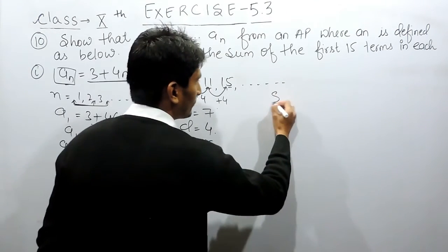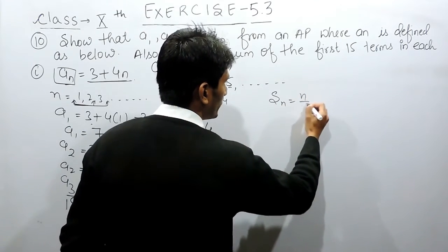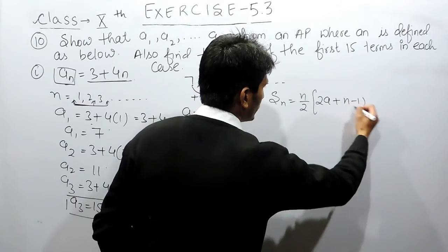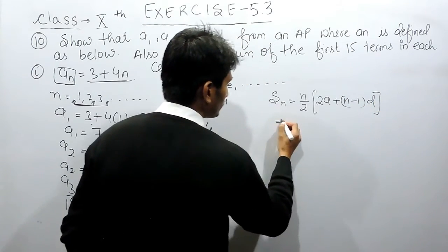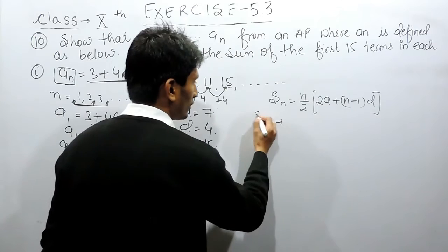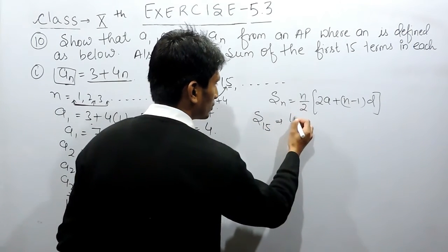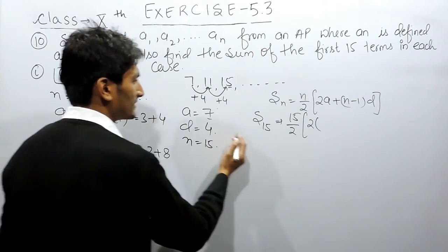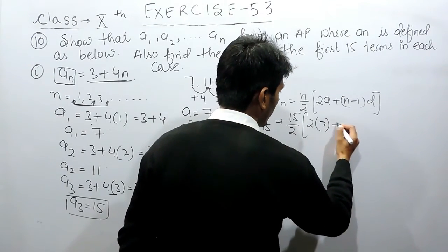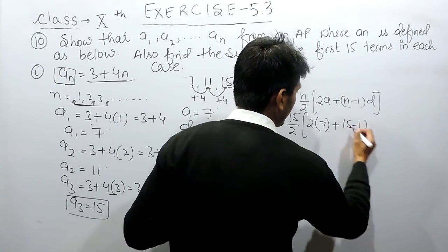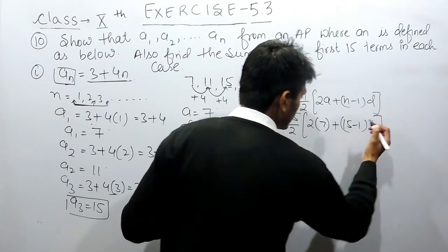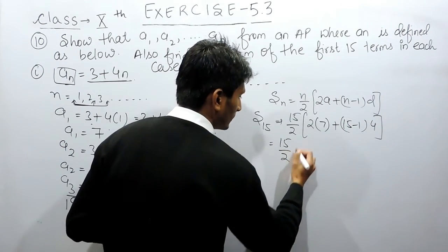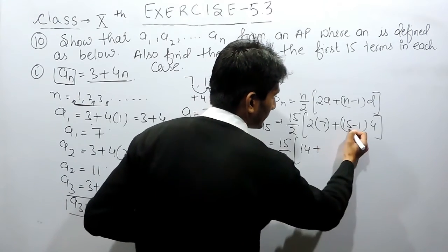Now we have to find the sum of first 15 terms, so the number of terms is 15. The sum of n terms is equal to n by 2 into 2a plus n minus 1 into d. To find the sum of 15 terms, this will be equal to 15 by 2 into 2 into a, where the first term is 7, and there are 15 terms so 15 minus 1, and the common difference is 4.